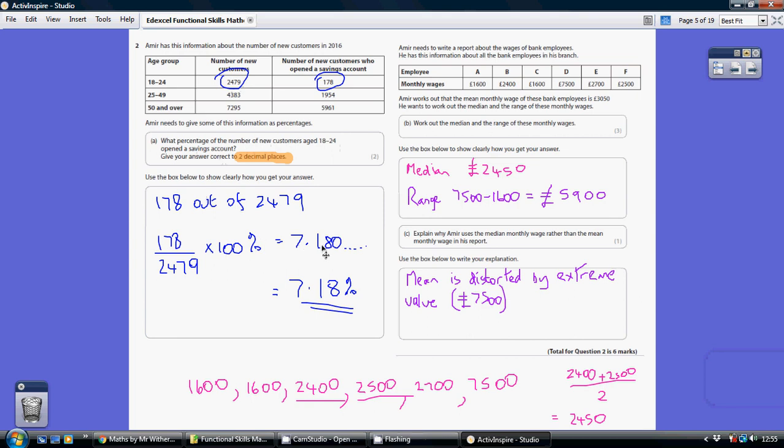That gives us 7.180... To two decimal places, so two numbers after the decimal point: one, two. Do we round the eight up? No, we don't, because that is not five or above. So our final answer is 7.18%.